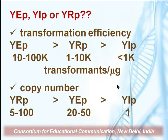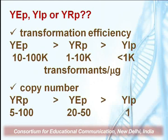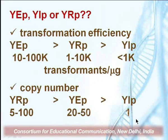The second factor is copy number — the number of plasmids present in a cell. A higher copy number means more copies of the gene of interest per cell. YEPs and YRPs have high copy numbers; for YRPs it ranges from 5 to 100, and for YEPs from 20 to 50 copies. YIPs however are very low, with only one plasmid copy per cell. Despite their low copy number and transformation efficiency, YIP vectors are still used for cloning in yeast.